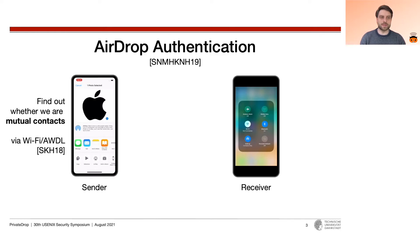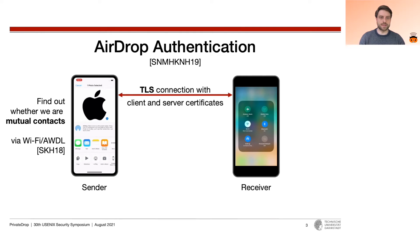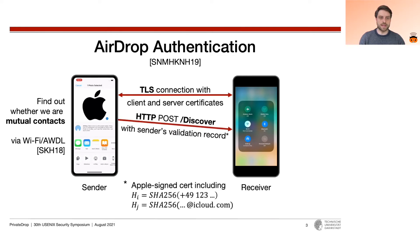You typically want to send your personal pictures or other sensitive files only to people you already know. Here's how it works: the two devices set up a TLS connection using client and server certificates. Via this connection, the sender sends an HTTP discover message that includes a validation record. The validation record is essentially an Apple-signed certificate that contains hashes of the user's contact identifiers — phone numbers and email addresses registered with Apple during account setup, verified through a process like receiving an authentication code via SMS.